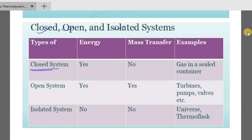A system can transfer energy and mass. Closed system means mass cannot be transferred. The mass is not transferred in a closed system.